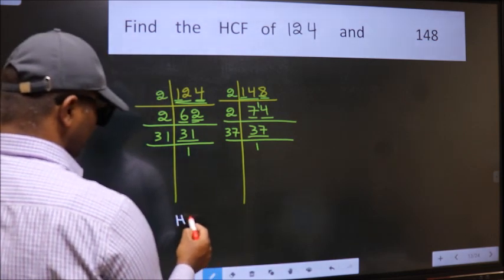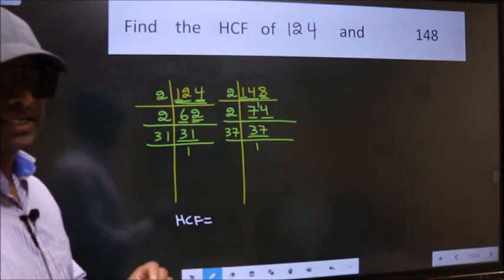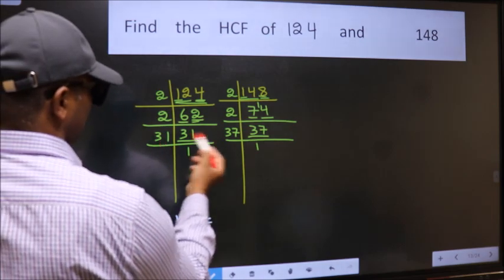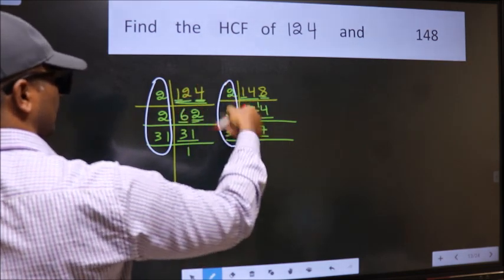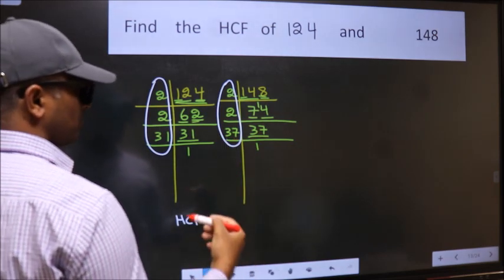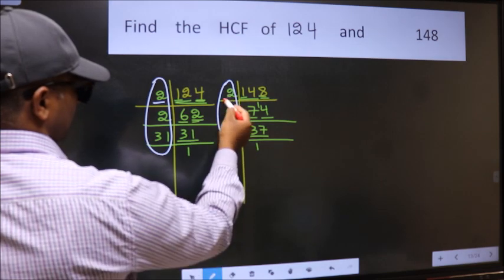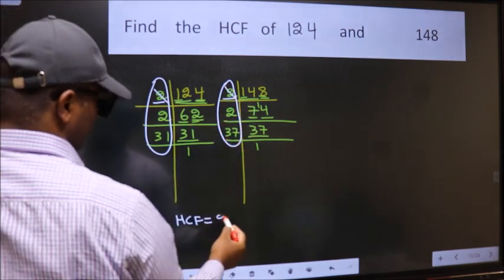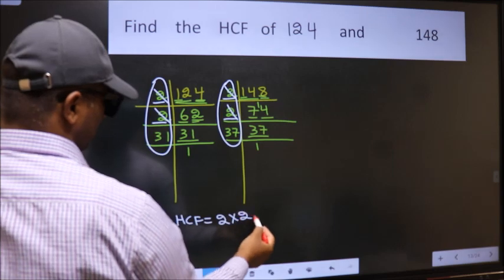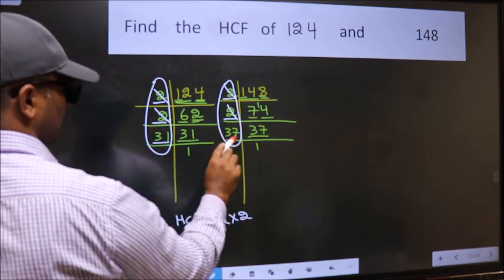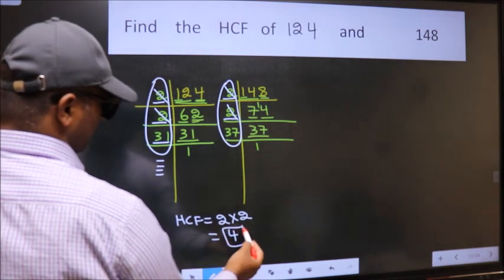Therefore, our HCF is the product of the numbers which should be present in these two places, here and here. Let us find the numbers which should be present here and here. Starting with the number 2. Do we have 2 here? Yes, so cut 2 right here. Next number 31. Do we have 31 here? No. No more numbers have been left out. So our HCF is 2 times 2 times 2, 4 is our HCF.